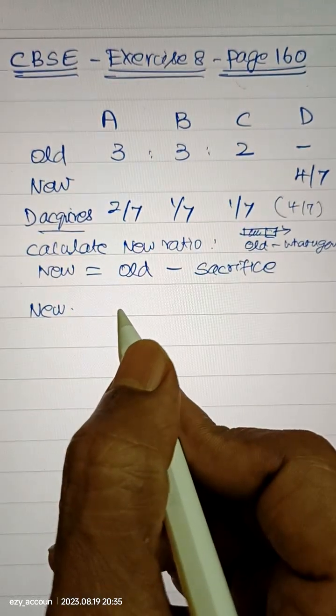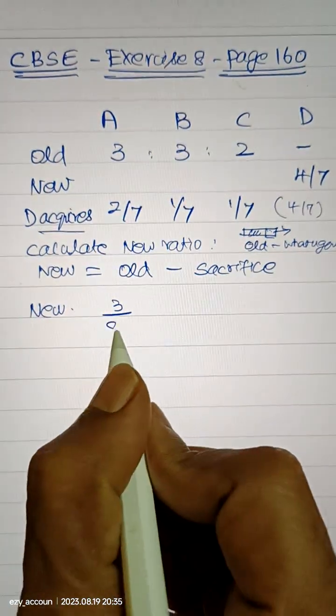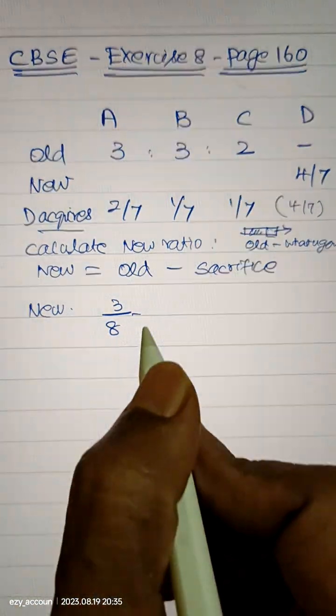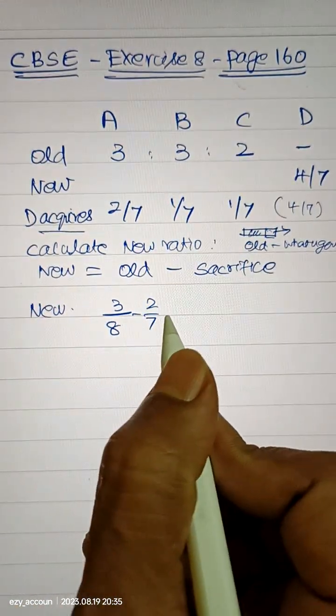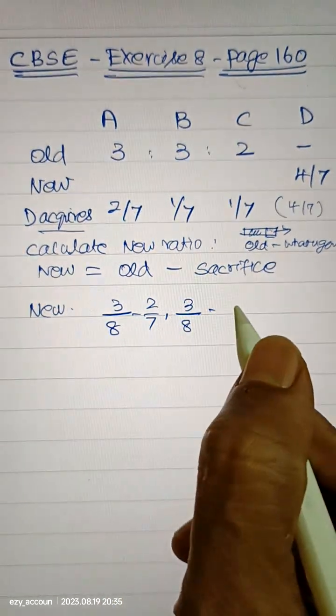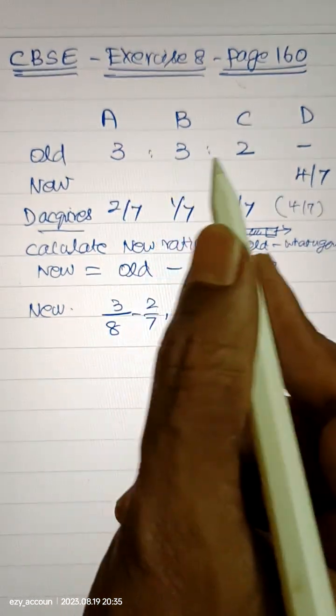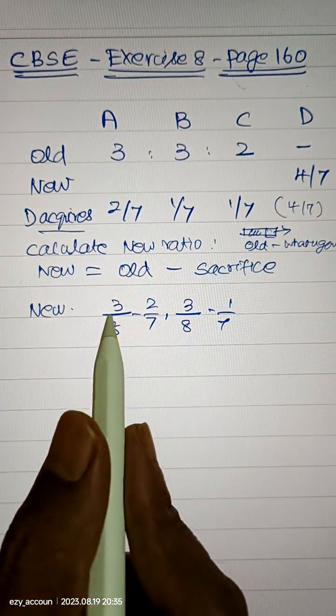So here in that case, new ratio is 3 is to 3 is to 2, means 3 by 8 minus 2 by 7, correct. Similarly, 3 by 8 minus 1 by 7. How you got 8? 3 plus 3 plus 2 is 8.